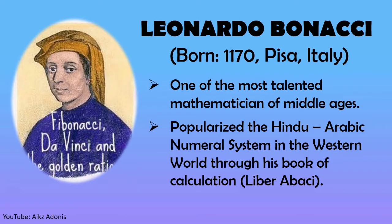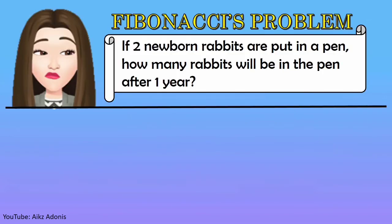Liber Abaci, or Book of Calculations. In this book, Fibonacci posed and solved a problem involving the growth of population of rabbits based on idealized assumptions.